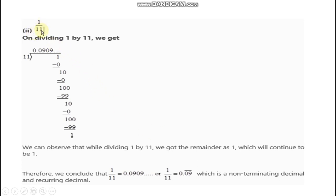The second part is 1 upon 11. When we start to divide 1 by 11, we carry 0 with the decimal. 10 is smaller than 11, so we carry another 0. We carry 10 with 0 to get 100. Now, 11 times 9 is 99, and 100 minus 99 gives us remainder 1.